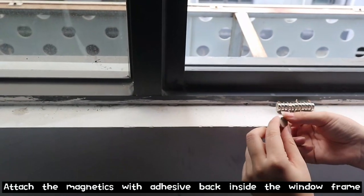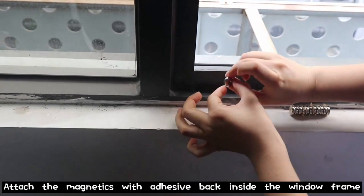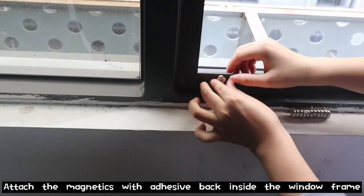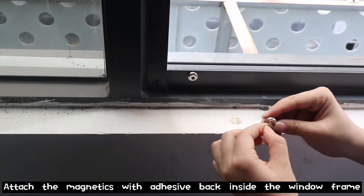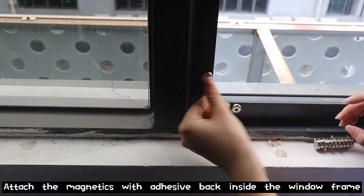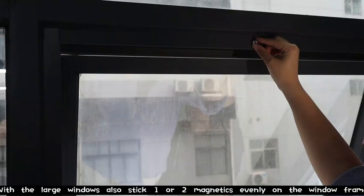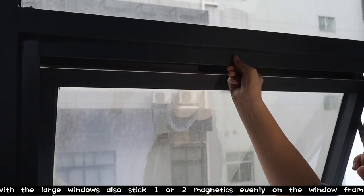Attach the magnetics with adhesive back inside the window frame. With large windows, also stick one or two magnetics evenly on the window frame.